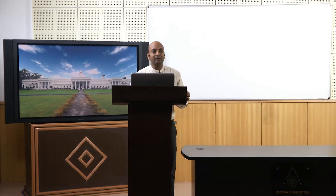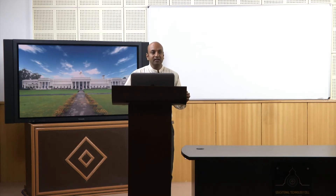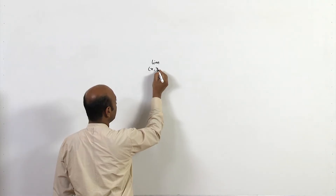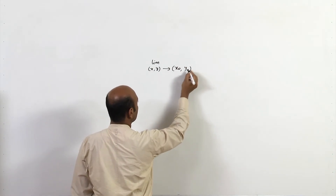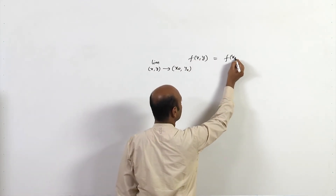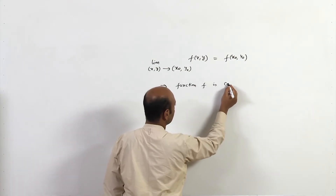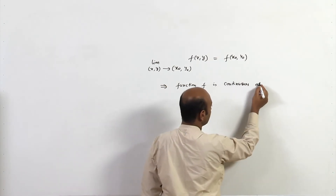Now we will see what we mean by continuity of multivariable functions. A function f(x,y) is said to be continuous at a point (x₀,y₀) if three properties hold: the function is defined at (x₀,y₀), the limit as (x,y) tends to (x₀,y₀) of f(x,y) exists, and that limit equals f(x₀,y₀). A function is continuous if it is continuous at every point of its domain.